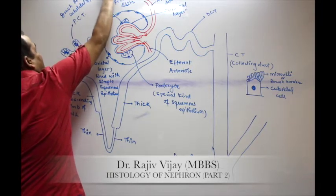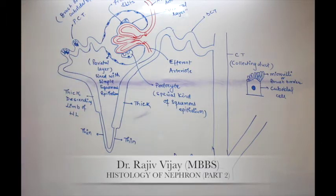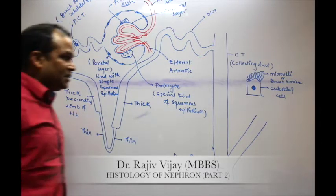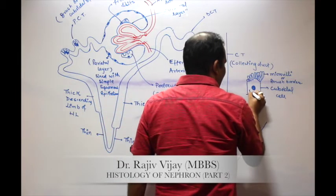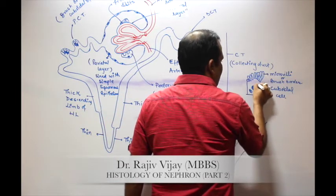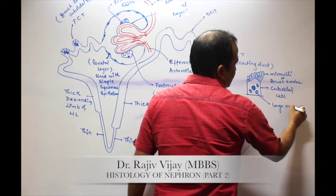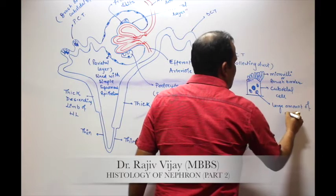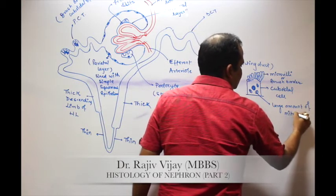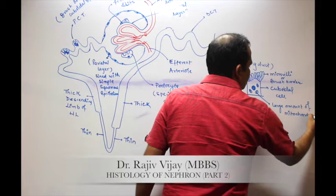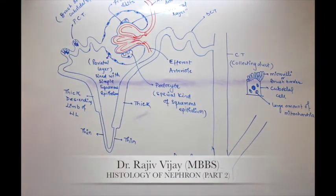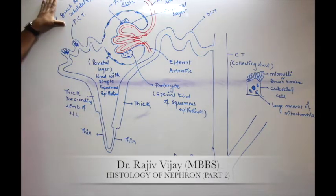This brush border cuboidal epithelium of the PCT contains a large amount of mitochondria. So the epithelium of the PCT is brush border cuboidal epithelium with a large amount of mitochondria.